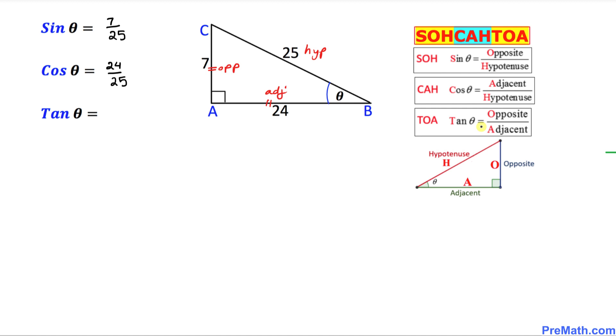And finally, TOA means tangent equal to opposite over adjacent. In our case, opposite is 7 and the adjacent is 24.